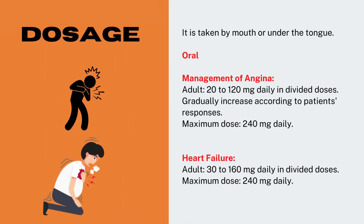Dosage: It is taken by mouth or under the tongue. Oral management of angina — Adult: 20 to 120 mg daily in divided doses, gradually increased according to patient's response; maximum dose 240 mg daily. Heart failure — Adult: 30 to 160 mg daily in divided doses; maximum dose 240 mg daily.